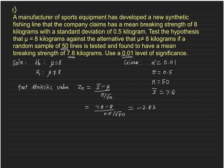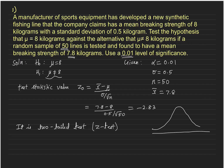Next, identify the critical region. Is this a two-tailed or one-tailed test? Looking at the alternate hypothesis — mu is not equal to 8 — it is a two-tailed test. Drawing the normal distribution diagram with alpha equals 0.01, the critical points are z₀.₀₀₅ and minus z₀.₀₀₅. We reject the null hypothesis if z₀ is greater than 2.58 or less than minus 2.58.